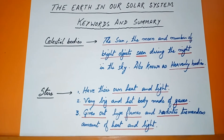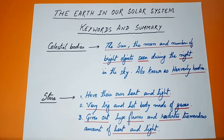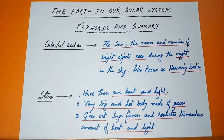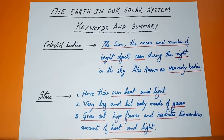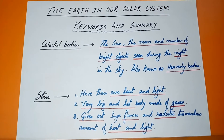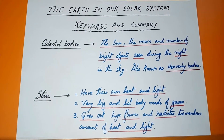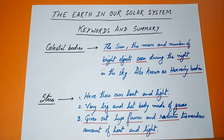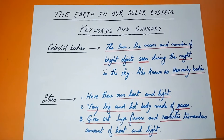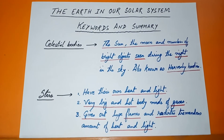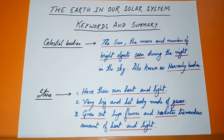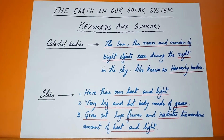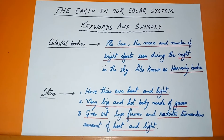The second part of the chapter covers keywords and summary. The first keyword is celestial bodies: the sun, the moon, and the number of bright objects seen during the night in the sky, also known as heavenly bodies. Any bright object seen during the night time is known as a celestial body, which is also known as a heavenly body.